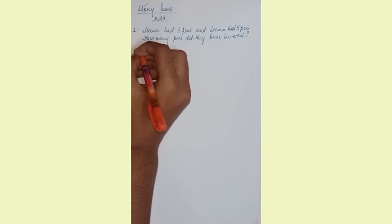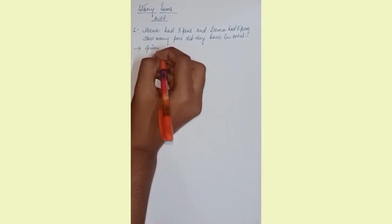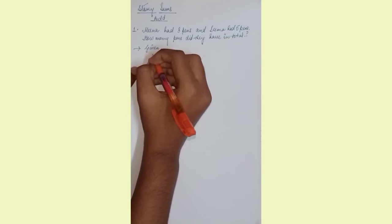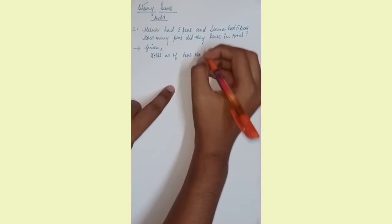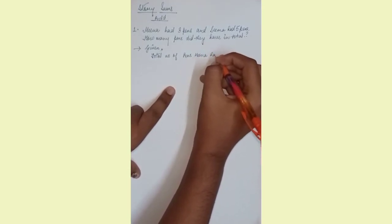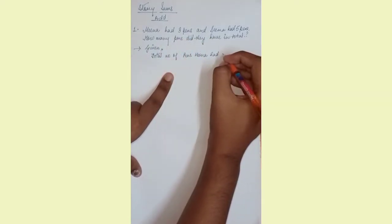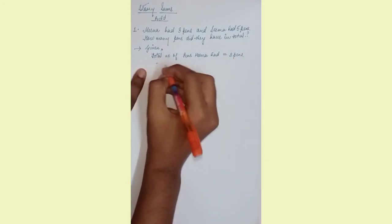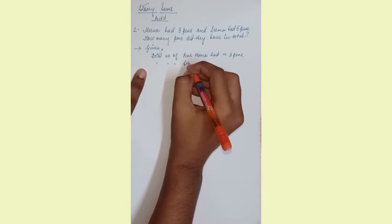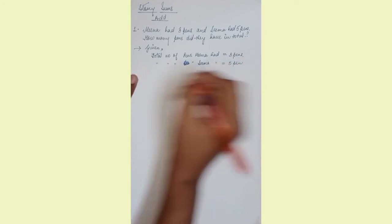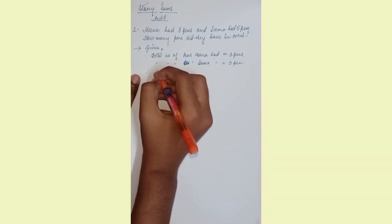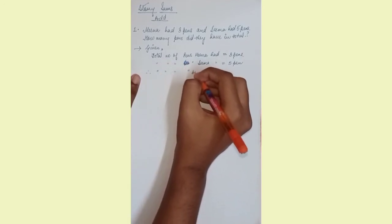Usually in story sums we don't follow the high techniques. We are given total number of pens Meena had. Meena had three pens, so total number of pens Meena had is equal to three pens. Total number of pens Sima had is five.